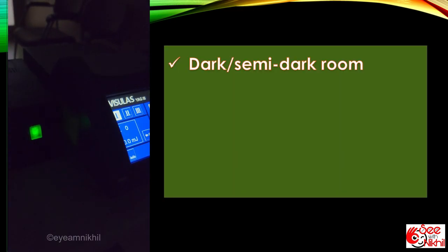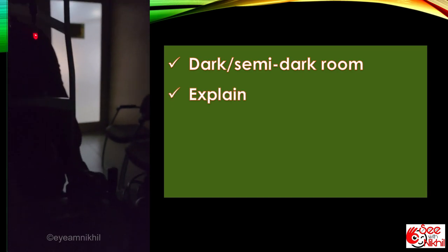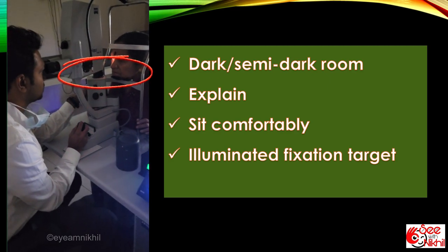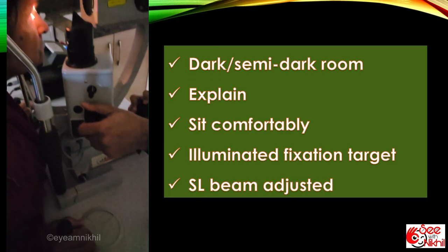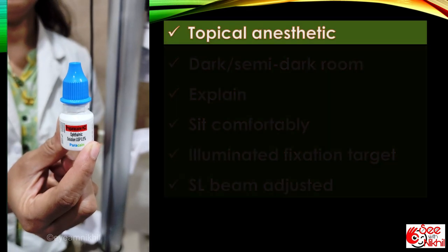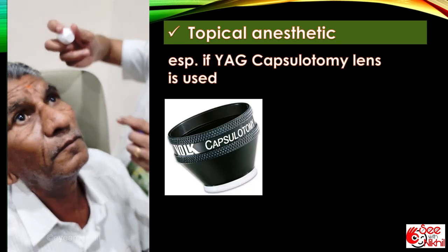Procedure is performed in a dark or semi-dark room. Patient is explained the procedure and made to sit comfortably on the machine. A fixation target is used to fixate with the other eye. Slit lamp beam is kept narrow and at an oblique angle.